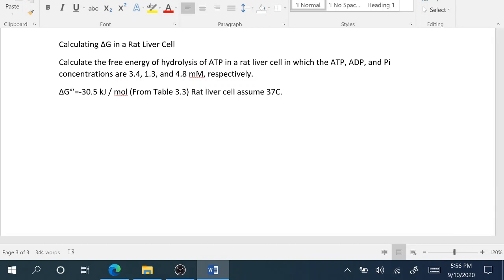But since we're in a rat liver cell I'm going to go ahead and do this calculation at 37 degrees C only. So from table 3.3 we can look up that the Delta G naught prime for hydrolysis of ATP is negative 30.5 kilojoules per mole, and again I'm going to assume that we are at 37 degrees C.